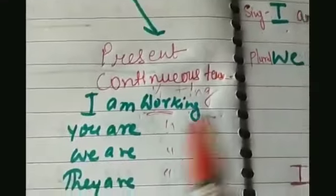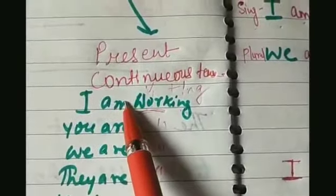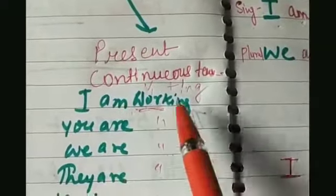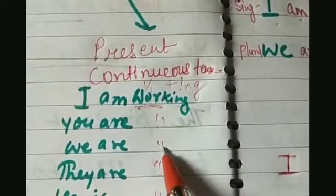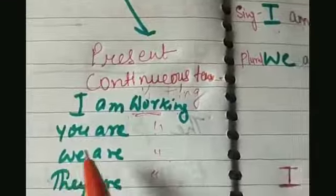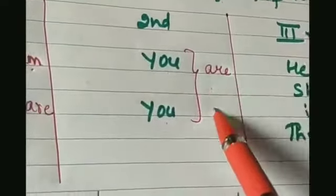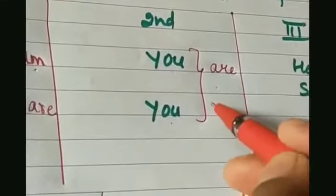In plural form, we use we, and the be verb changes from am to are — we are working. You is used in the second person in both singular and plural form, and with you the be verb are is used — you are working.